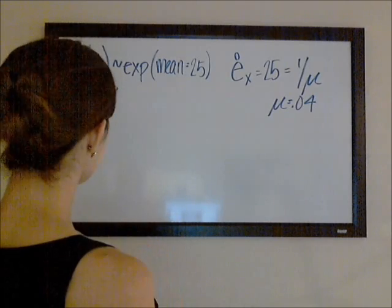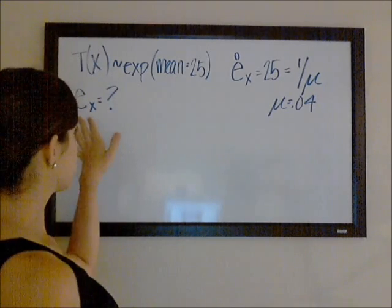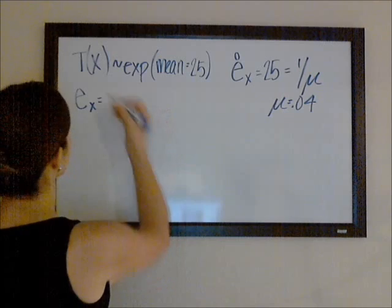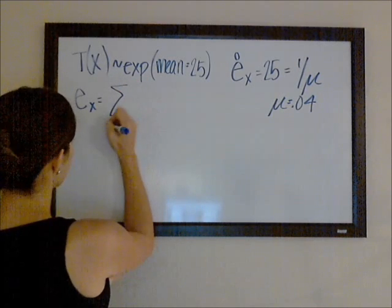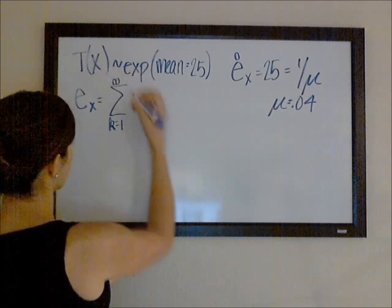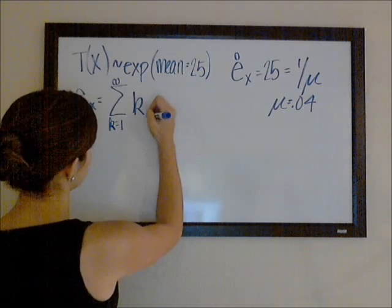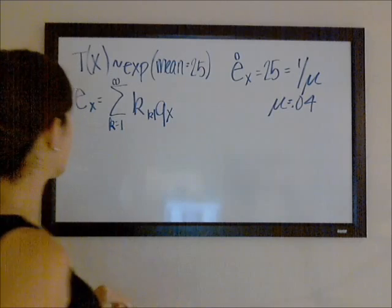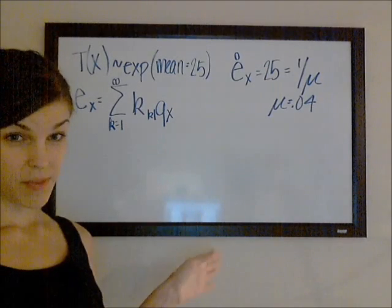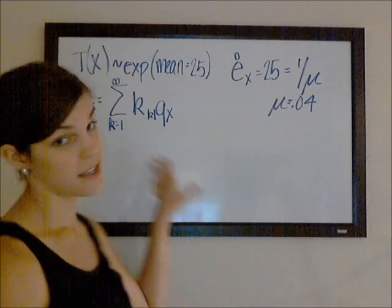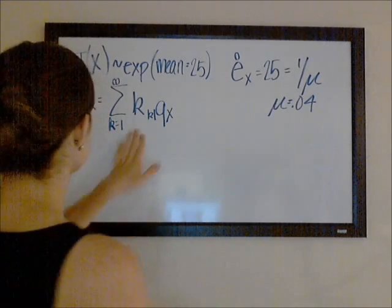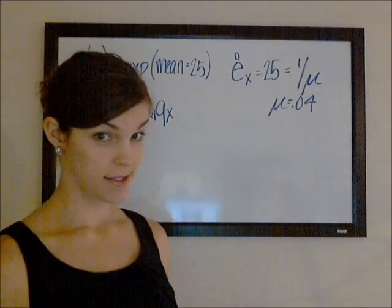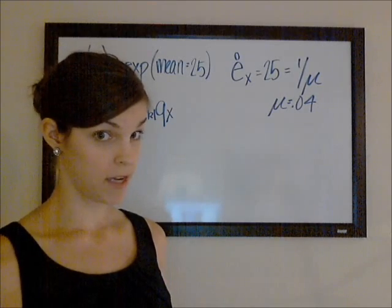So I did one video on curtate expected future lifetime before, and I think that I used this formula where you have the sum of k times the k year deferred probability of death. And so this initially made the most sense to me, but I'll show you another formula that's easier to work with when you're doing calculations. When we're looking at the expected future lifetime, it's really just the same kind of process as trying to find the expected value of any random variable.